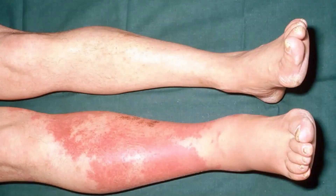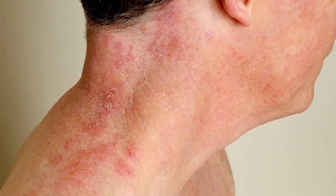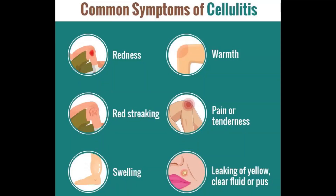Cellulitis usually affects the skin on the lower legs, but it can occur in the face, arms, and other areas of the body. It occurs when a crack or break in your skin allows bacteria to enter. Left untreated, the infection can spread to your lymph nodes and bloodstream and rapidly becomes life-threatening. Cellulitis usually does not spread from one person to another.